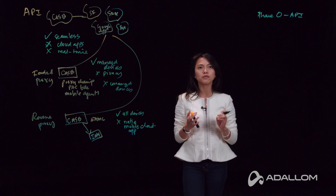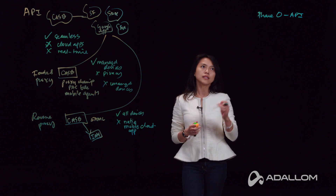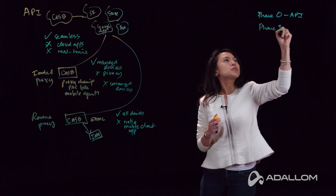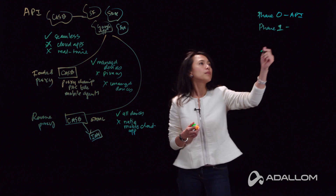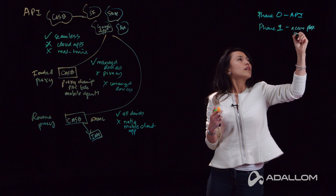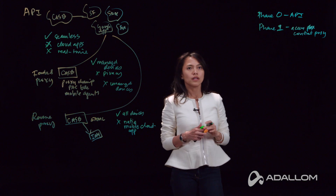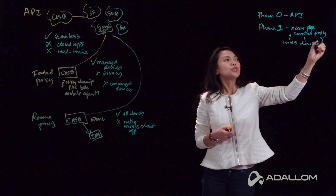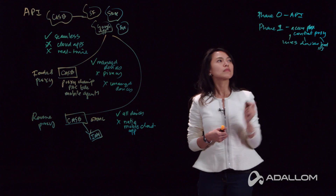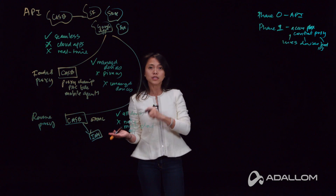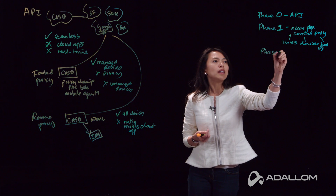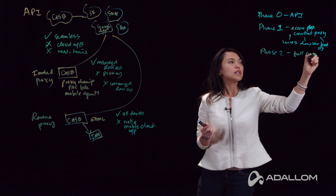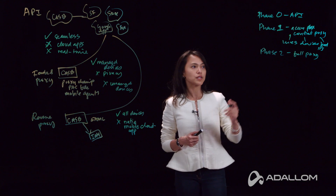API keeps you out of the path of traffic and gives you visibility into what's happening in your cloud applications, as well as governance around data sharing and data at rest. Then in phase one, start to introduce high security use cases — we recommend starting with the ability to proxy access control, ensuring it's the right users on the right devices. You can block bad IPs and control whether managed or unmanaged devices have access to your cloud apps. Phase two is when you introduce even more granular use cases with a full proxy and much more granular policies around access control.